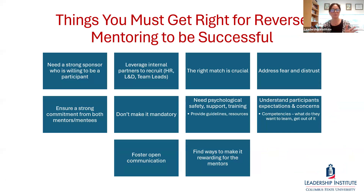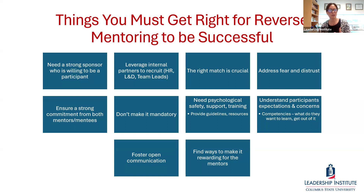Some things you must get right for reverse mentoring to be a successful program. First, you need a strong sponsor — someone high up in the organization who is willing to participate and also verbally champion the program. You need someone people trust and believe in, especially for the first round, who is a senior executive leader willing to participate and then champion the program afterward. Senior leaders who would be future mentees are going to look to that sponsor to see how they feel about the process before signing up themselves.